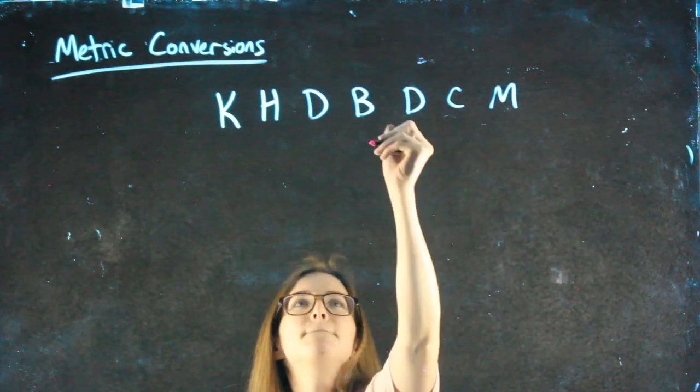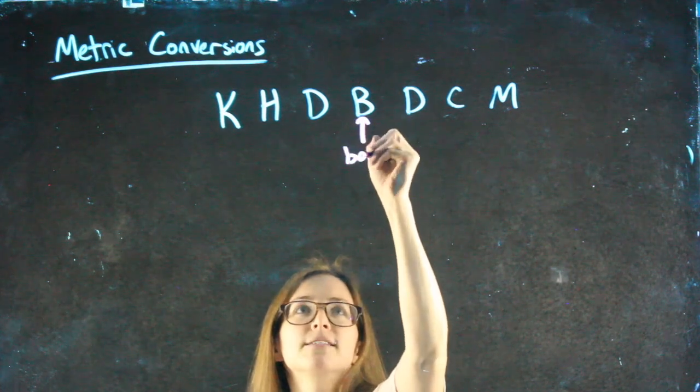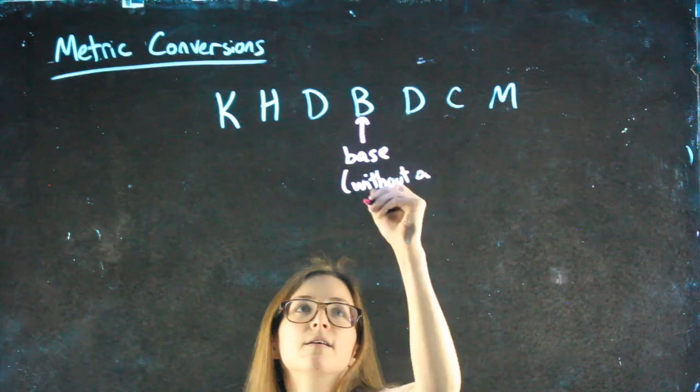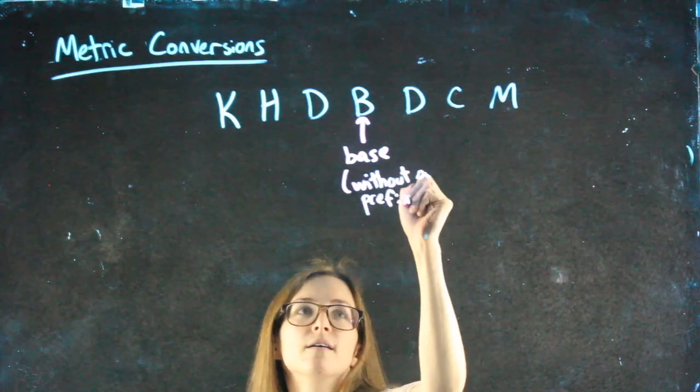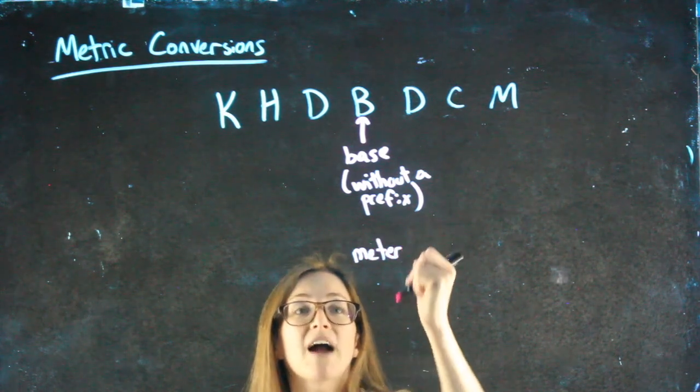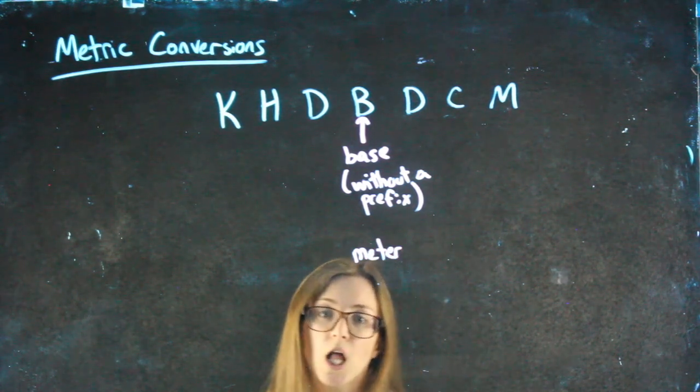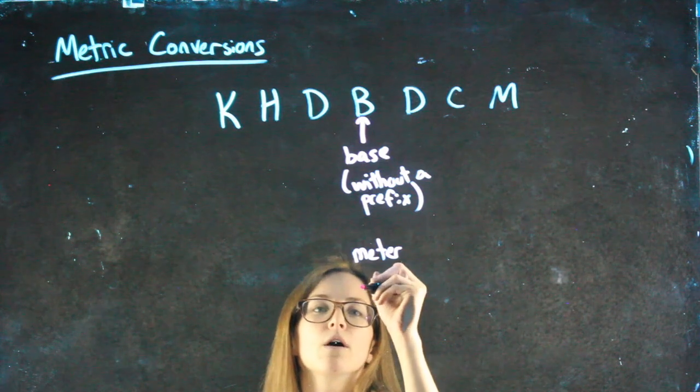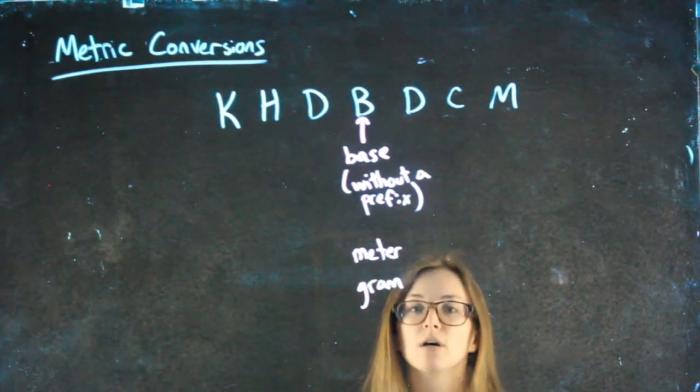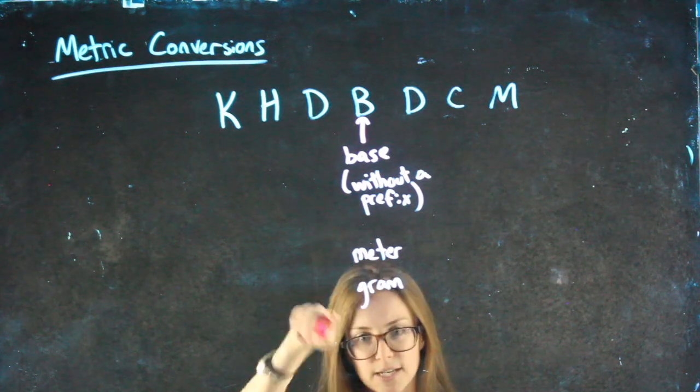The B stands for base, meaning something without a prefix. So for instance, meter rather than centimeter or kilometer or grams rather than kilograms or milligrams. So something without a prefix.